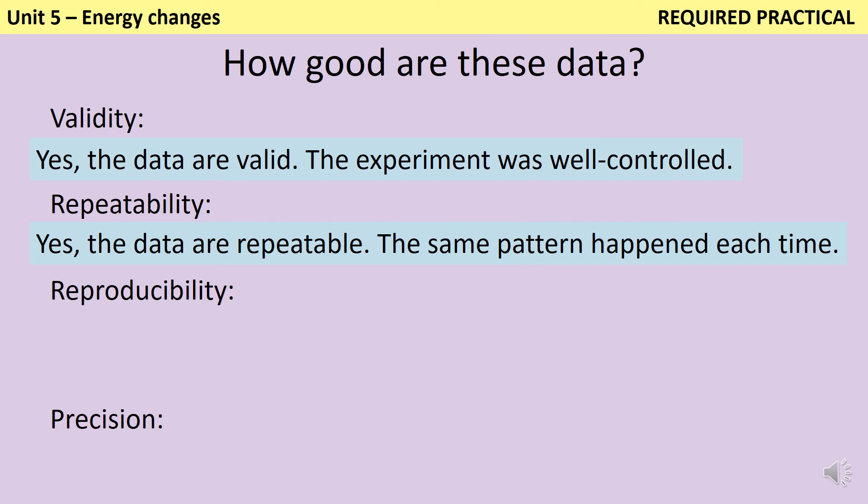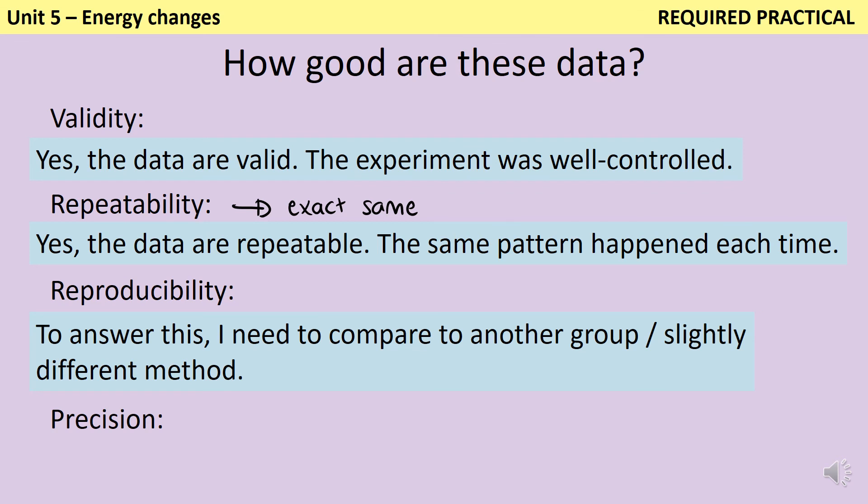Now, repeatability and reproducibility are often confused by students. Repeatability is when we have the exact same people and method, and we see the same pattern. Whereas reproducibility is this idea that science is usually peer-reviewed by other scientists, and they will do the same experiment to see whether they can get the same results, and that means that it's reproducible. So currently, I'm the only person that's done this investigation, and so I can't actually analyze the reproducibility of my data, because I haven't got anything to compare it to. In order to answer this, I would need another group who've done the same experiment, or I would need to do something that asks the same question, but in a slightly different way. So for instance, instead of adding metals to copper sulphate, I might add them to copper chloride instead.